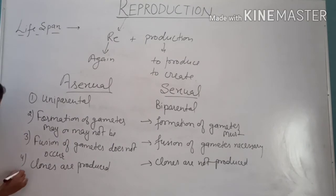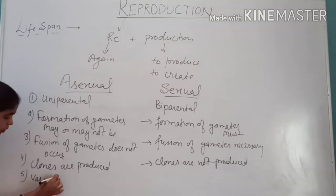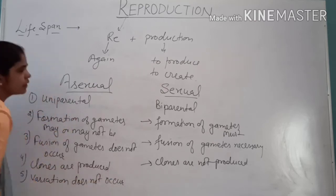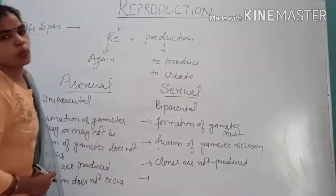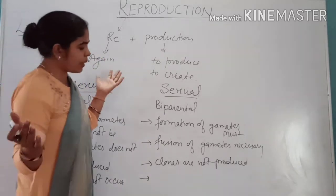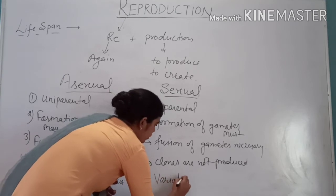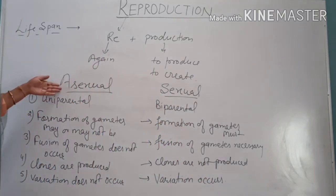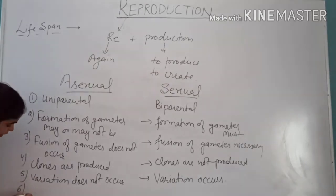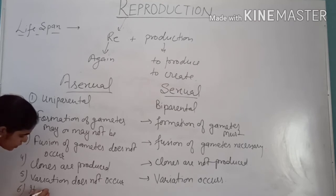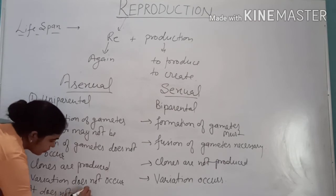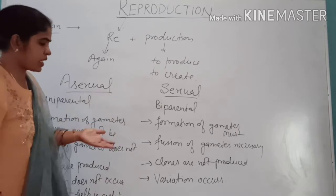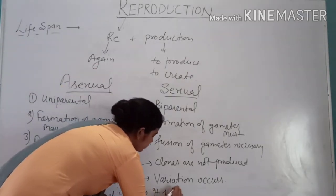In asexual reproduction, variations do not occur because only a single parent is involved. While in sexual reproduction, because the offspring has a genetic combination of both parents, variations occur. Since asexual reproduction does not produce variations, it does not help in evolution. Because sexual reproduction produces variations, it helps in evolution.